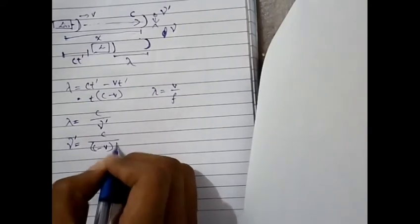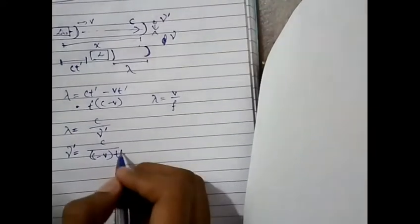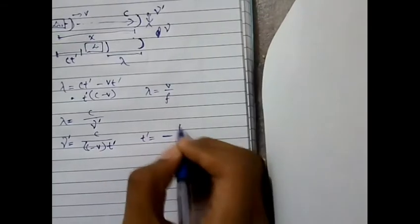C minus V times D. That's actually the D prime I'm sorry I made a mistake here. And we know that D prime is D over under root 1 minus V square over C square.